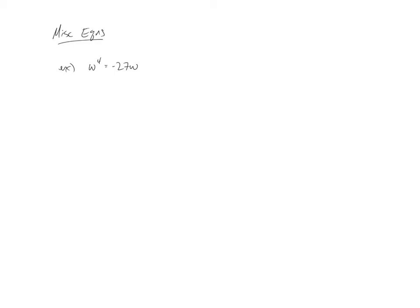So first example we'll look at, w to the fourth equals negative 27w. This happens to be a polynomial, so as we continue on, let's keep in the back of our mind that we're going to have four solutions here when we're done.